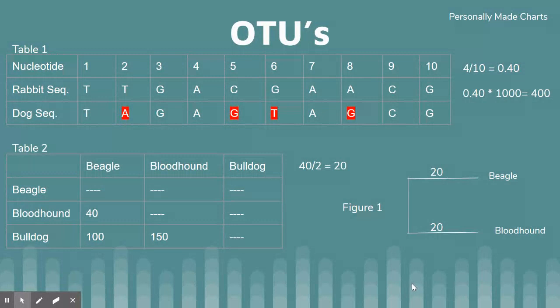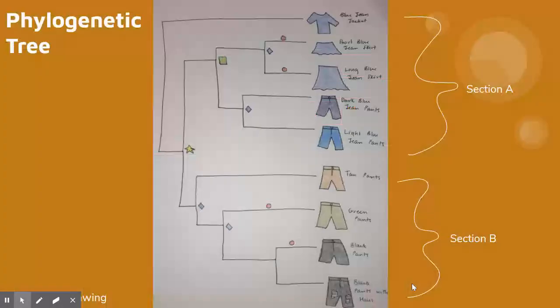In Table 2, the distances between the OTUs have already been calculated. We would observe that beagles and bloodhounds are the most closely related, and this would be their distance on the tree. It was calculated by taking the 40 from the chart and dividing it by 2 because it represents the total distance between the two animals. This is seen in Figure 1.